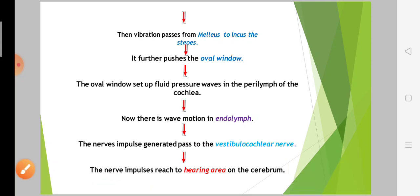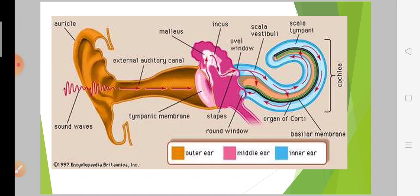So friends, this is the physiology of the ear. Now let's look at the diagram to make it more clear. Firstly, the audible range is 20 to 20,000 hertz, and the frequency the human ear can hear is 500 to 5,000 hertz.